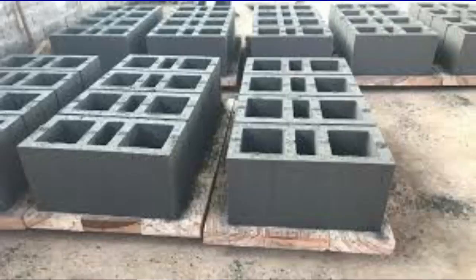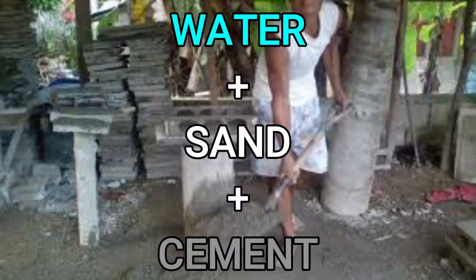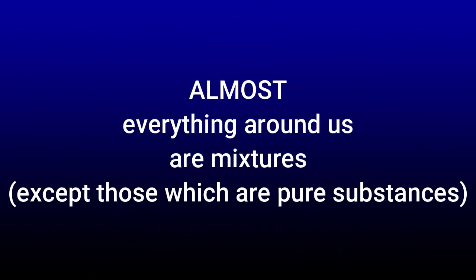Have you seen a hollow block before? These are those heavy, rough objects used to build houses and buildings. A piece of hollow block is made up of water, sand, and cement. Why am I asking these questions? Because basically, almost everything around us is a form of mixture in one way or another. So mixture is a very simple topic.